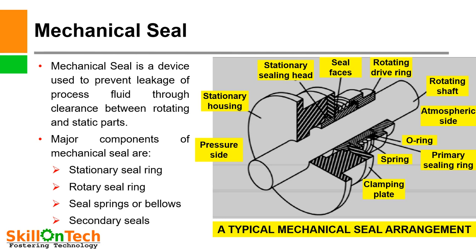A picture of a typical mechanical seal arrangement is shown. Here you can see the pressure side and the atmospheric side. This is a stationary housing and this is a rotating shaft. This is the rotating driving unit of the seal, and this is the stationary seal. This is the seal face where they are mating. This is the spring, which provides compression to the seal faces. And this is the primary sealing ring and this is the clamping plate.